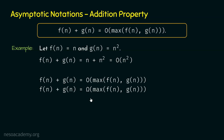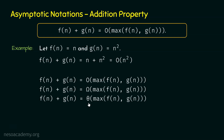What about the theta notation? We know if big O and big omega are both satisfied, then theta notation is automatically satisfied. Because maximum of f(n), g(n) is acting as both the upper bound and the lower bound of f(n) plus g(n). So f(n) plus g(n) is also theta of maximum of f(n), g(n). This is the key takeaway of this topic.